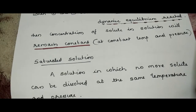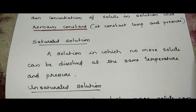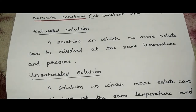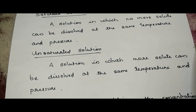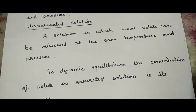Next: saturated solution. A solution in which no more solute can be dissolved at the same temperature and pressure is called a saturated solution. An unsaturated solution is one in which more solute can be dissolved at the same temperature and pressure. In dynamic equilibrium, the concentration of solute in the saturated solution is its solubility — that is, the maximum amount of solute dissolved in the solvent. At a saturated solution, that concentration is the maximum, so the concentration of solute in the saturated solution is its solubility.